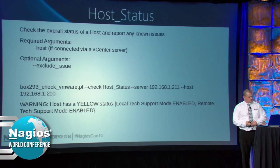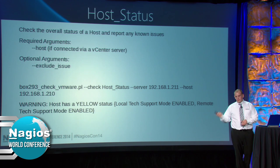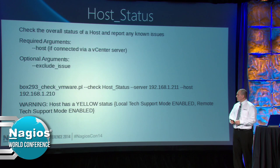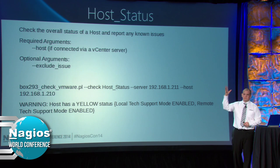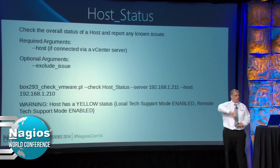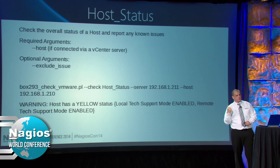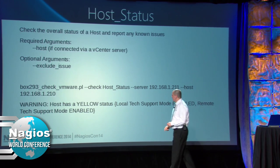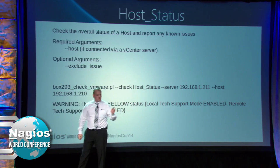Host status - this will check configuration status. I'm going to work on adding hardware status in the future. But things like SSH is enabled or console access is enabled - by default that actually triggers little yellow exclamation marks in vCenter. So you can actually exclude those issues. If they're things you want turned on and they're normal for you, there's an exclude issue flag to prevent those from causing an alert.